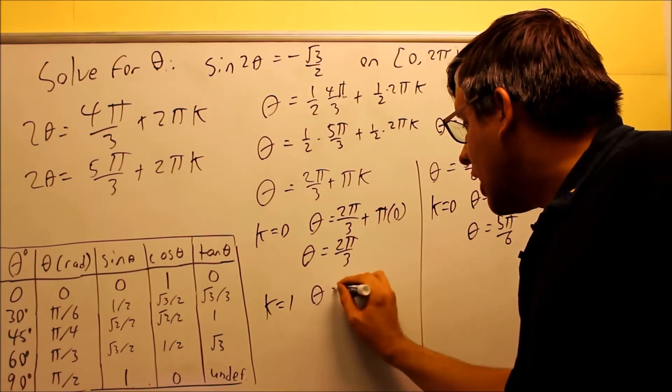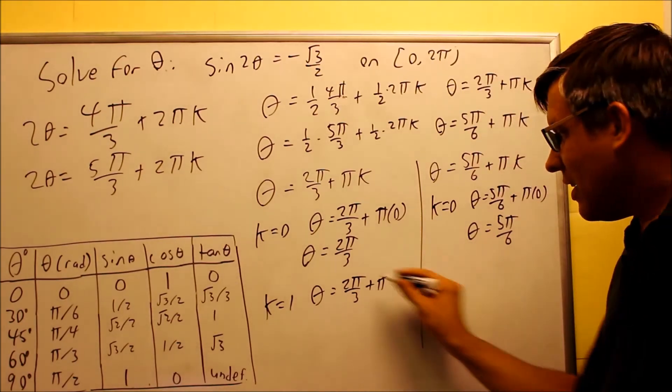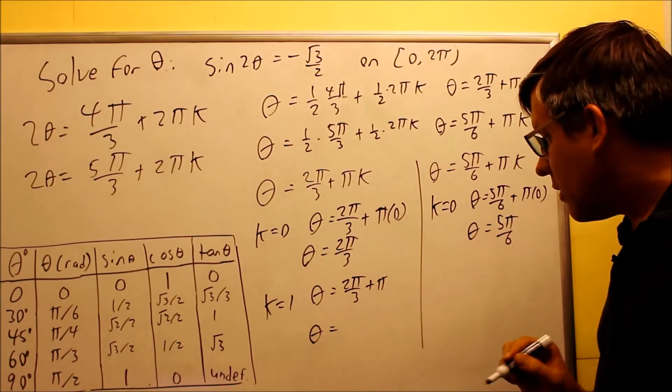Next, let's let k equal 1. So if k equals 1, I get θ equals 2π/3 plus π times 1, which is just going to be π. Now I want to add that together with some common denominators, multiply that by 3/3, and I'll get 5π/3. That is another answer also that's between 0 and 2π. So that would be another solution I would have. So so far I have three solutions I've found.